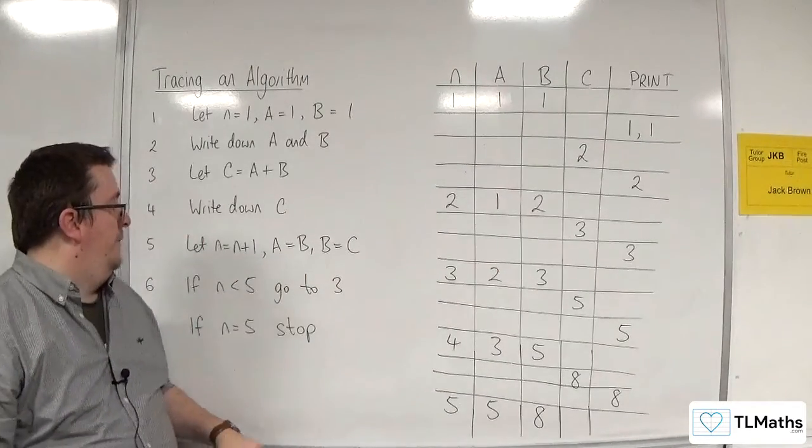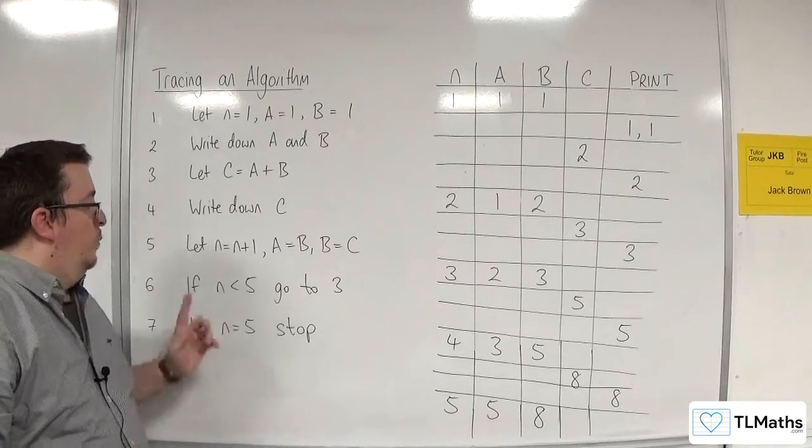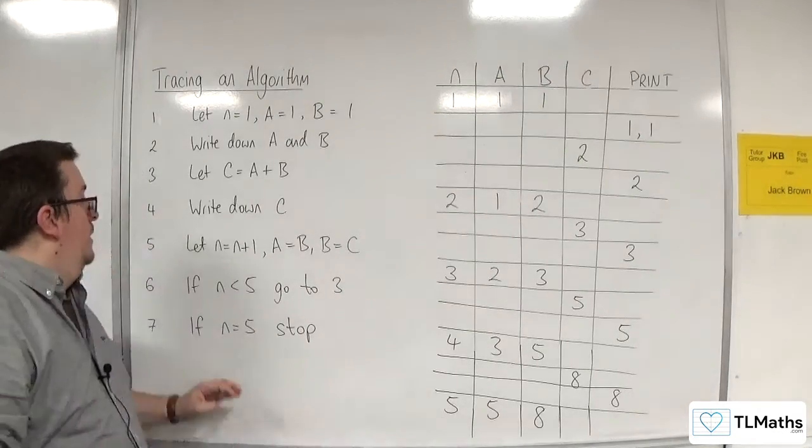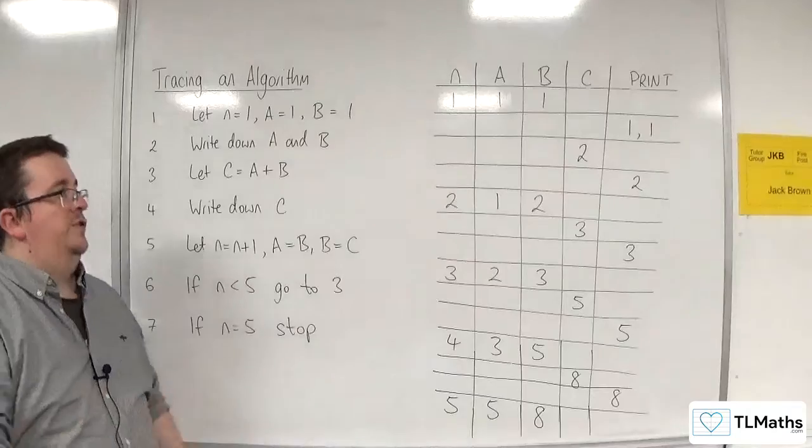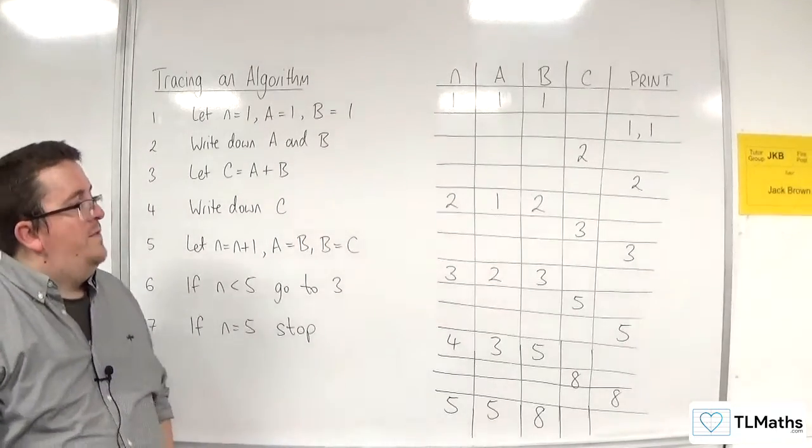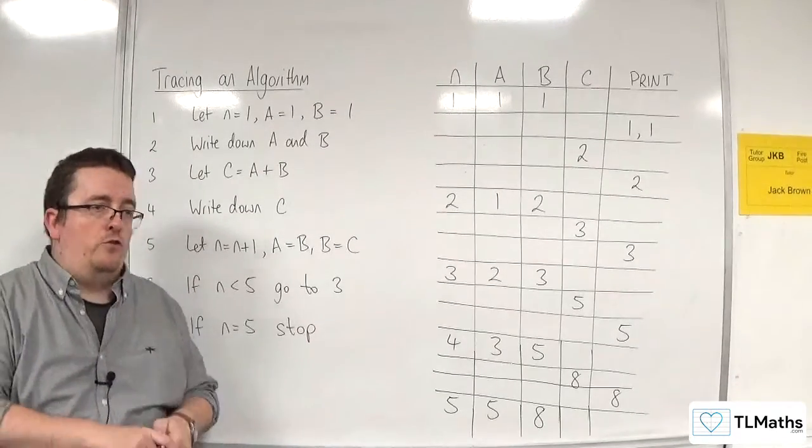If N is less than five, go to step three. Well, it's not. It's five. So we go to the next step. If N is five, we stop. So we stop. So I have now traced through my algorithm.